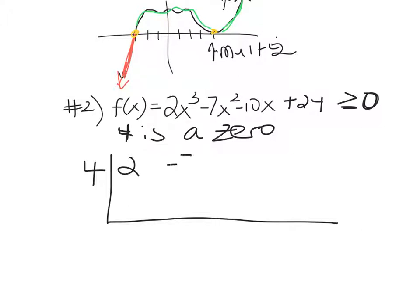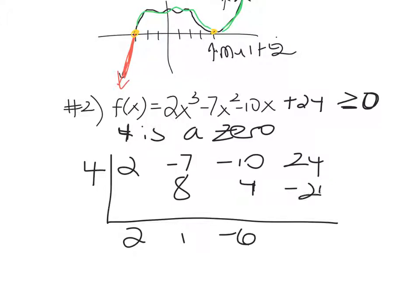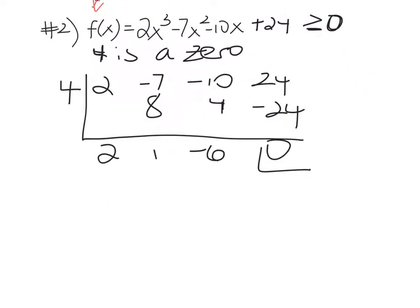So I have 2, negative 7, negative 10, and 24 for the synthetic division with 4. Bring the 2 down. 2 times 4 is 8, you get 1. 1 times 4 is 4, which gives me negative 6. Negative 6 times 4 is negative 24, and we get 0 like we wanted. So we end up with 2x squared plus x minus 6.